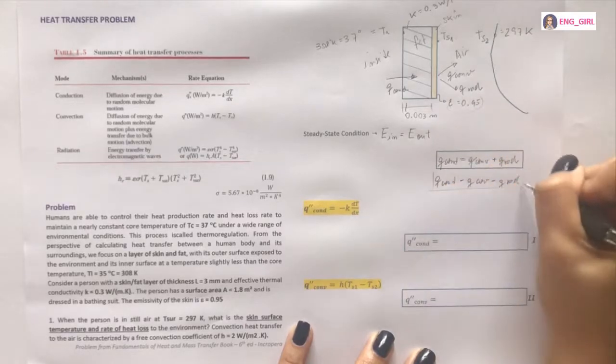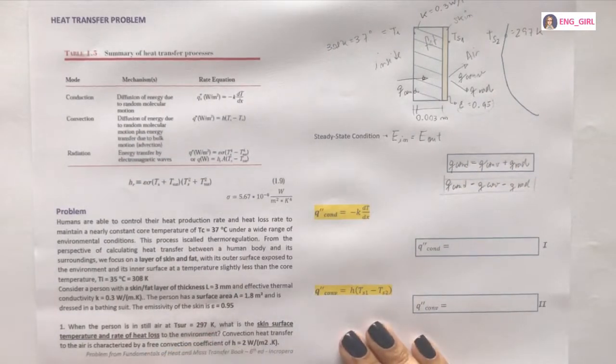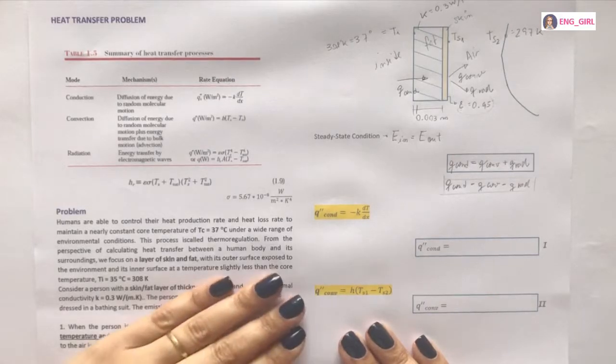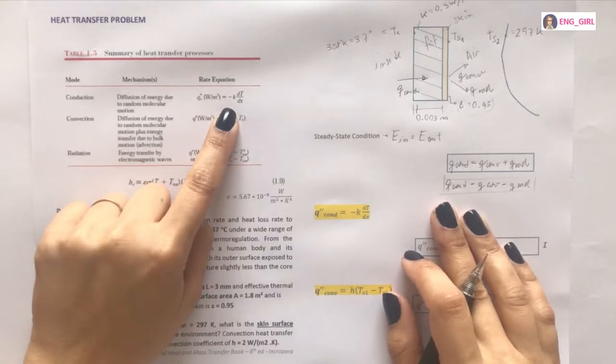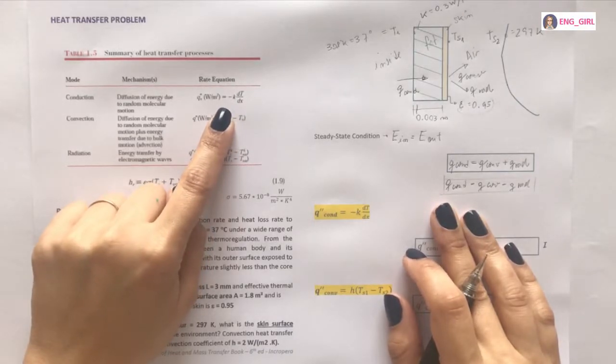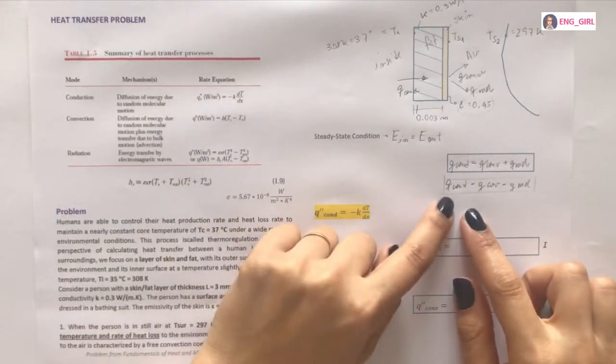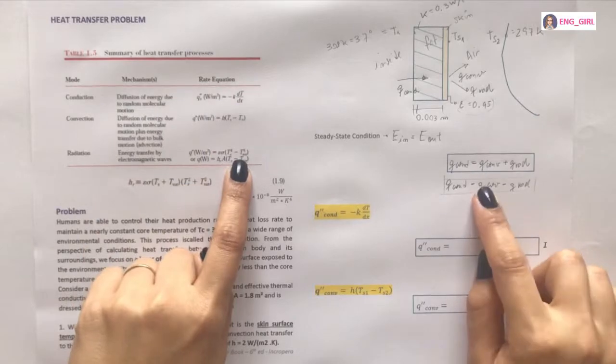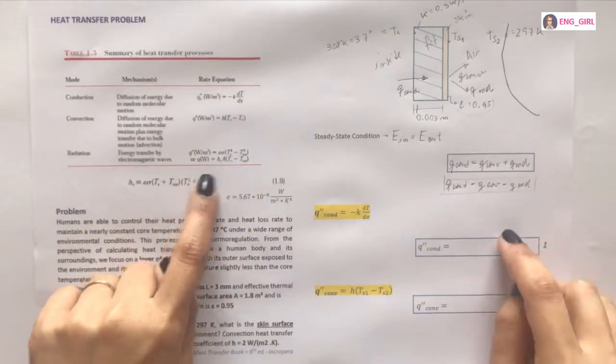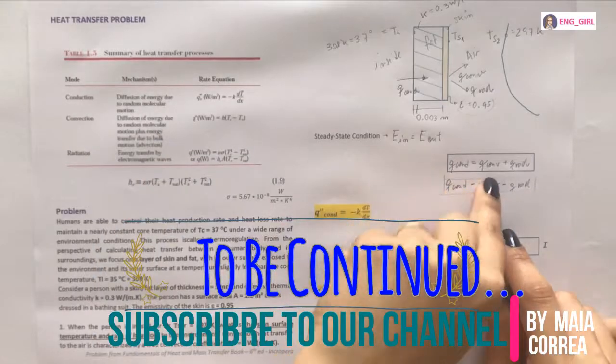Ok? Both ways. So, the problem is almost solved because you just have to check in the summary the corresponding equation and replace it in this one. For instance, Q conduction - conduction, this equation. Convection, this equation. Radiation, this equation. And you have to replace here.